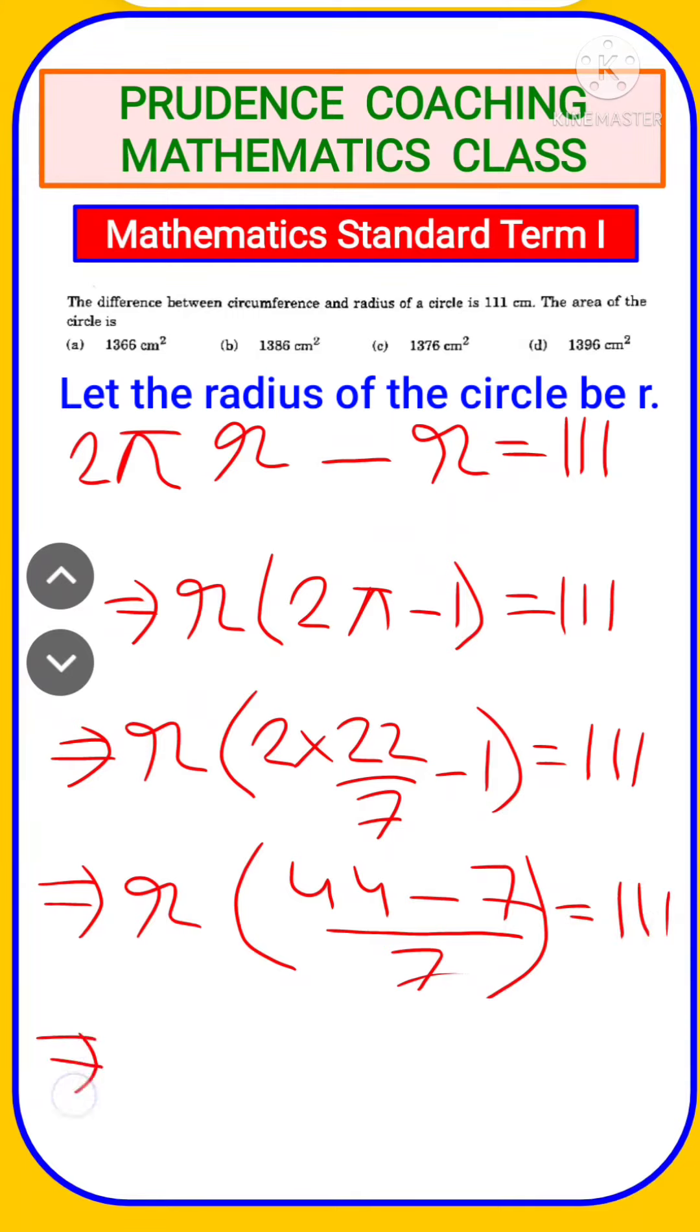Now we will get r into 37 by 7 equal to 111. So here the value of r will be 111 into 7 divided by 37. We know 37 into 3 is 111, so the value of r here is 21.